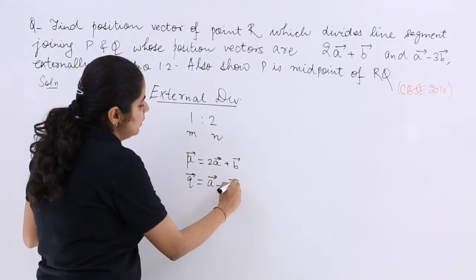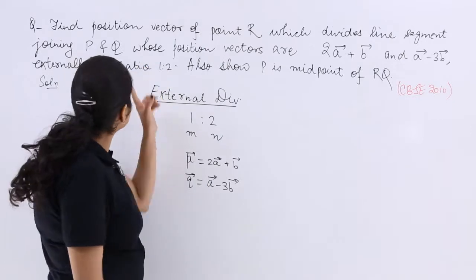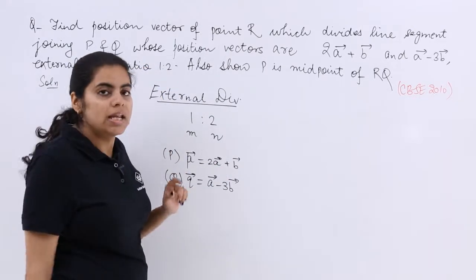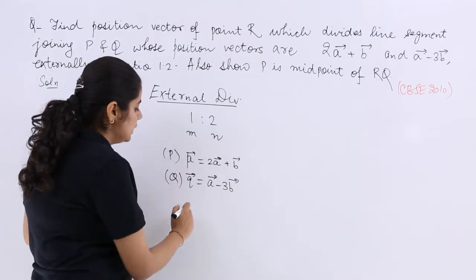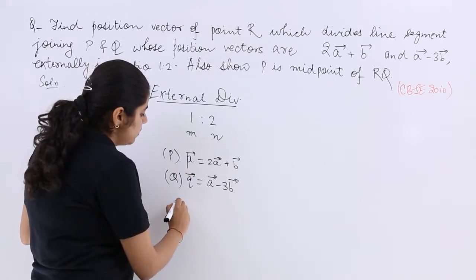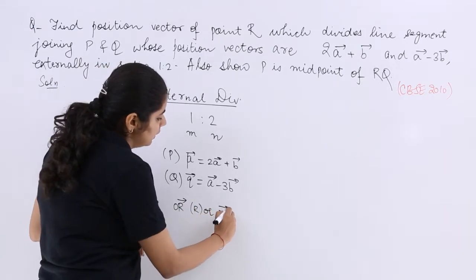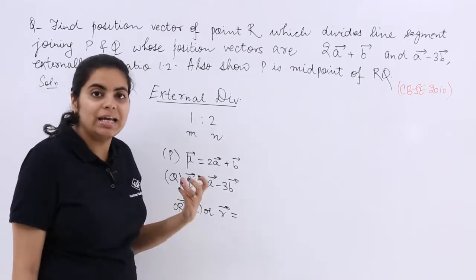So let me name it as P vector and let me name this as Q vector which is equal to A vector minus 3B vector. So this is nothing but that of P and Q. Now what should be the answer like?